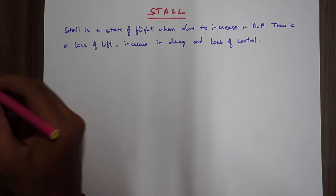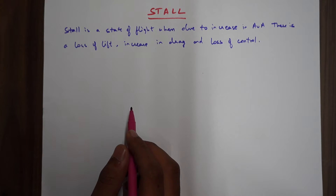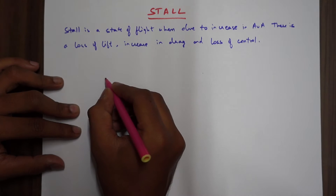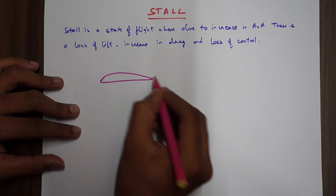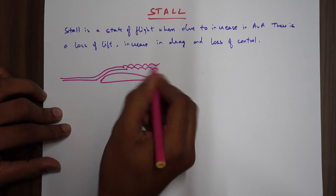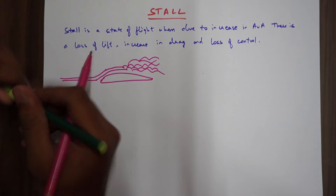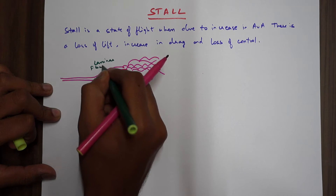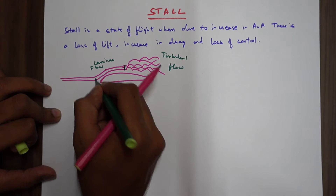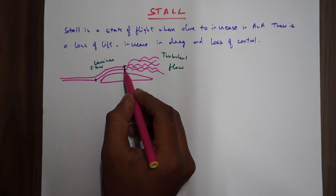Now we'll start discussing the primary aspects of why stall occurs. As mentioned in the definition, it is due to the increase in angle of attack. Before discussing that further, let's have a quick recap of the flow pattern around the wing. This sketch shows laminar flow, turbulent flow, and the transition point and stagnation point.